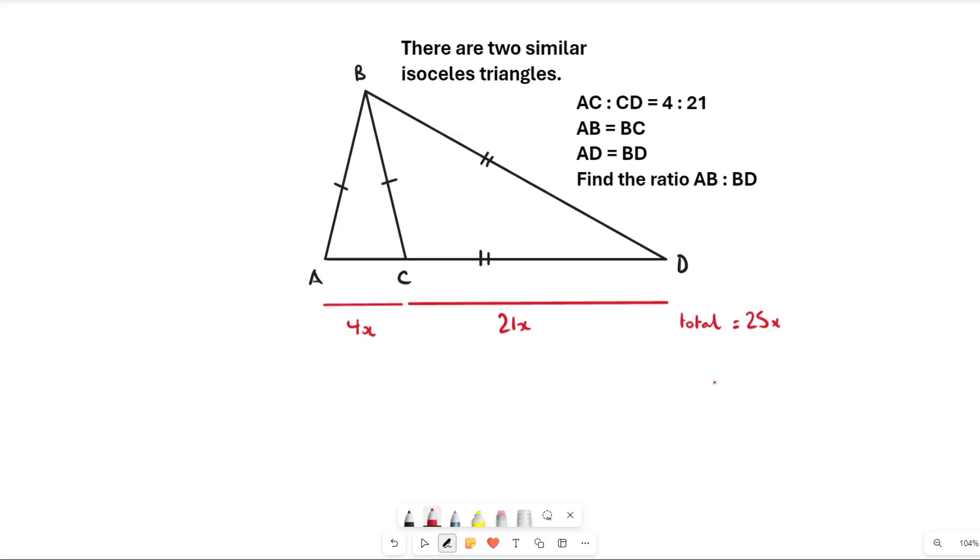We know that there has to be a scale factor for the smaller shape and the bigger shape. For example, we've got AC and we multiply it by a scale factor, say k, to get this length here.